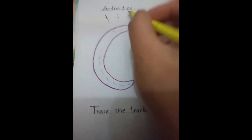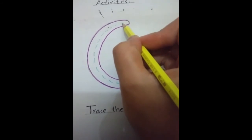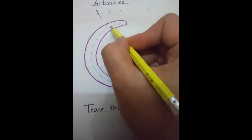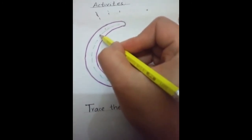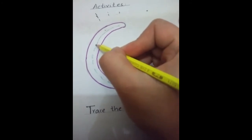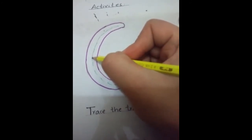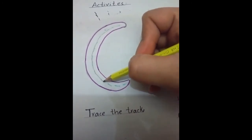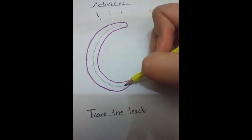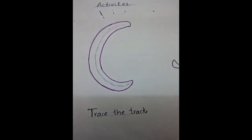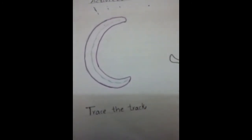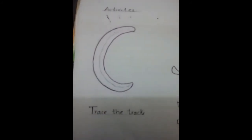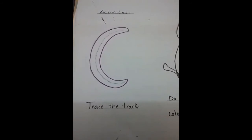Now I will trace this track with the help of a pencil. You can trace this track with the help of a light pencil — like this. See: car, see cat, see cat. Great, I have done this. This is small c.